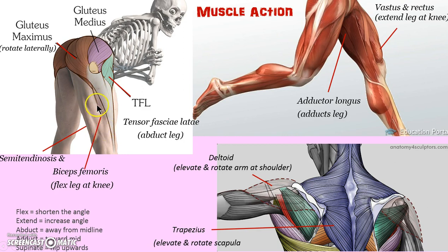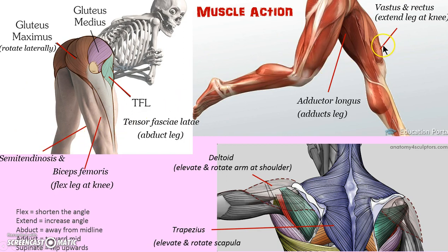Bicep femoris, one of the hamstring muscles in the back of the leg, and the semitendinosis — you can just imagine when these muscles shorten, they're going to flex the knee so that the heel comes back. It's kind of a posterior flexion. Whereas the vastus and the rectus we talked about are going to shorten and bring the knee up — it flexes towards the hip.